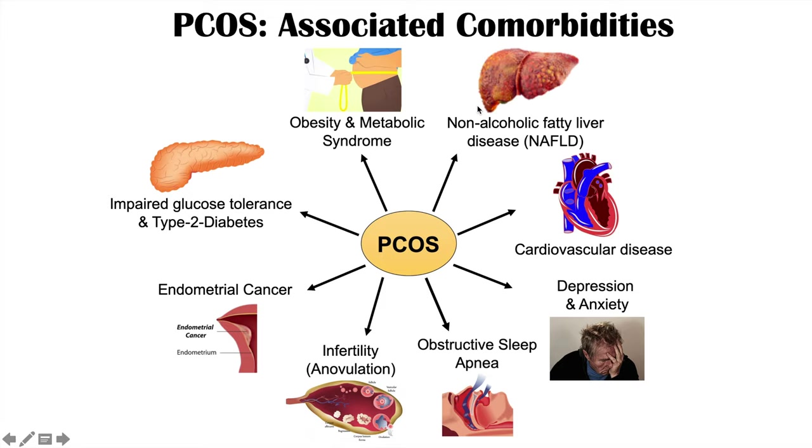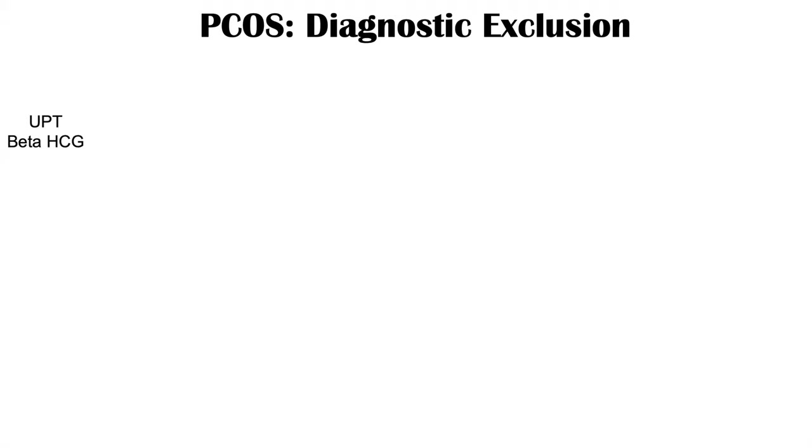How do we diagnose PCOS? It's important to recognize that PCOS is a diagnosis of exclusion, meaning we have to rule out many other conditions that could be causing the signs and symptoms such as menstrual irregularities or hyperandrogenism. The first step is a urine pregnancy test or beta-HCG, because if positive, the patient is pregnant — and pregnancy can cause amenorrhea as well.